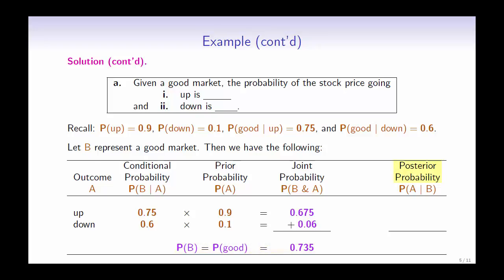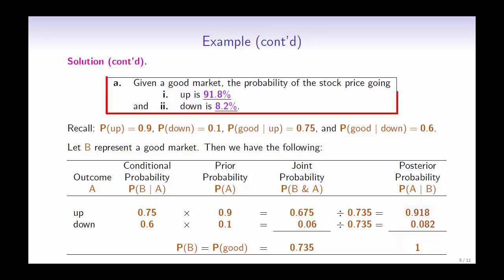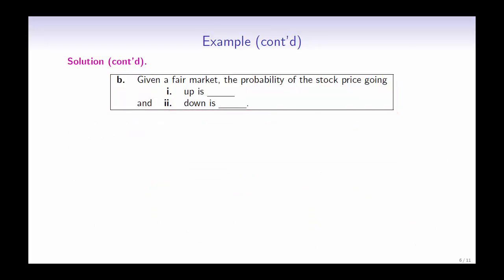Using this, we can calculate the posterior probability by dividing the joint probability by the probability of a good market. The probability of the stock price going up given a good market is 0.918, and the probability of the stock price going down given a good market is 0.082. To check your answer, the sum of the two posterior probabilities should give you 1. Therefore, given a good market, the probability of the stock price going up is 91.8% and down is 8.2%.